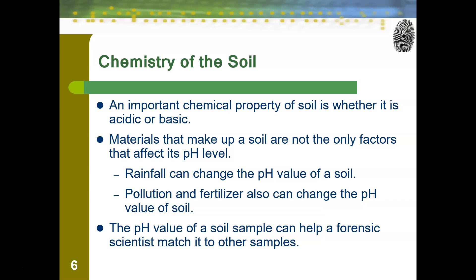The chemistry of the soil is very important for forensic science purposes. One key property is whether the soil is acidic or basic. The materials that make up a soil are the primary factors affecting pH level, but that pH can be altered by other factors. Rainfall can change the pH value of the soil, depending on what the pH value of the rainfall is.